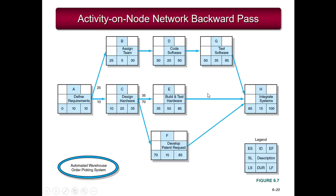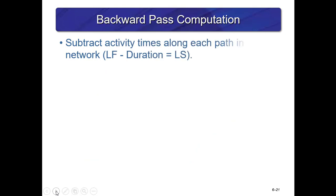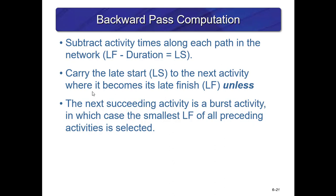The backward pass: hiding the early start and early finish data, when we reach the end of the project we have 100 days or units, and we go backwards subtracting durations along each path until we get back to our early finish of 10. Late finish minus duration equals late start. You carry the late start to the next activity going left, where it becomes the late finish of the preceding activity — unless the next activity is a burst activity, in which case you select the smallest late finish of all preceding activities.